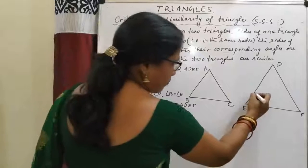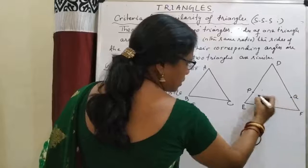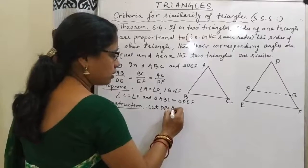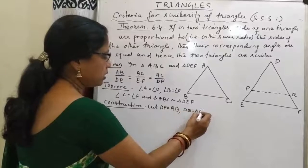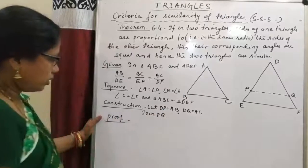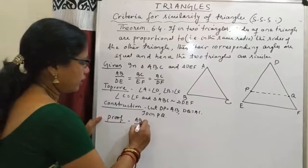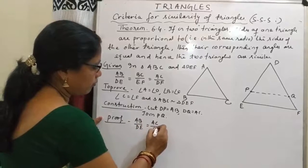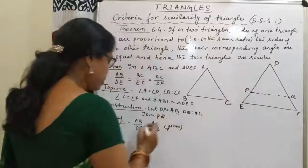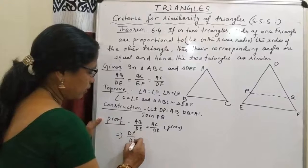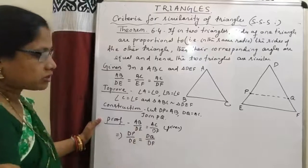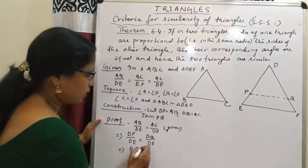Construction: cut DP equal to AB and DQ equal to AC, then join PQ. It is given that AB/DE = AC/DF. Since we have taken AB equal to DP and AC equal to DQ, this implies DP/DE = DQ/DF. So according to the Converse Basic Proportionality Theorem, this implies PQ is parallel to EF.